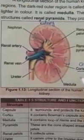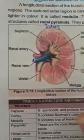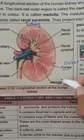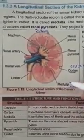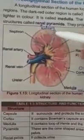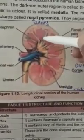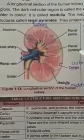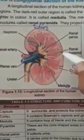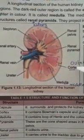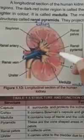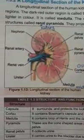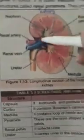The middle part, which has a cone-like structure, is called the medulla, or renal medulla. The renal medulla consists of several cone-like structures — see these cone-like structures here — which are called renal pyramids.